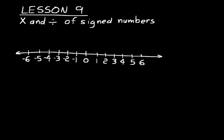Let's start out with something simple: two times two. We don't have any signs in front of those, so it's understood that means positive two times positive two. That means you're adding two twice. On our number line, just start at zero, add two, and then two again — we would get to four. Two times two is four.